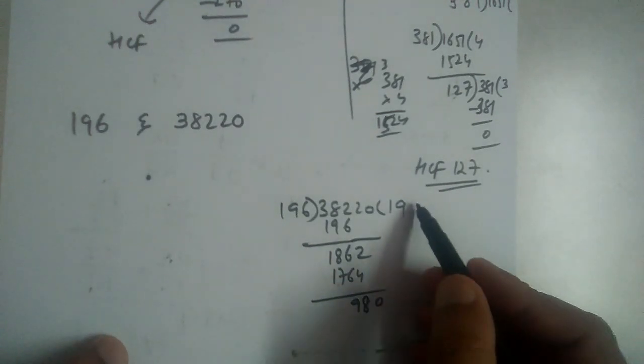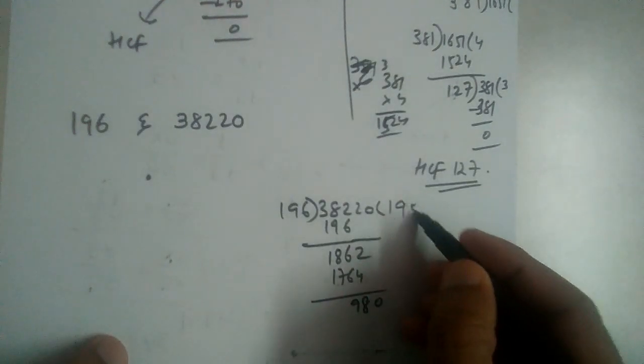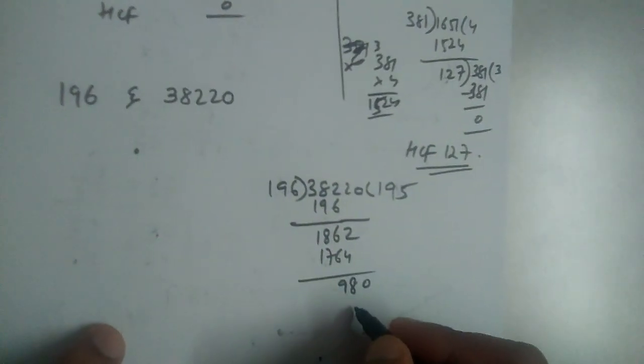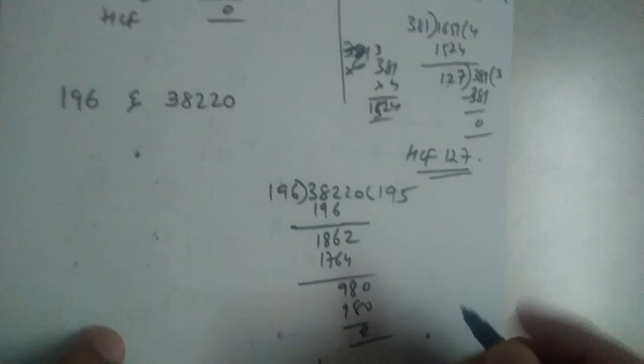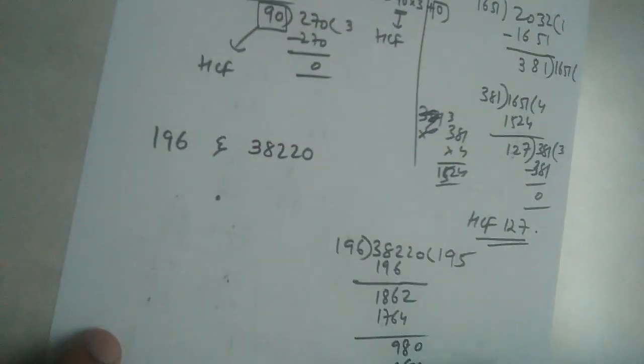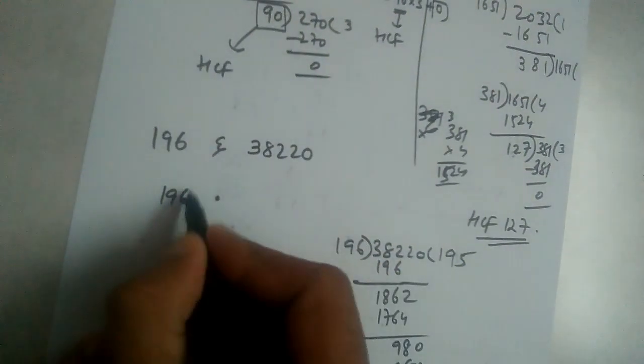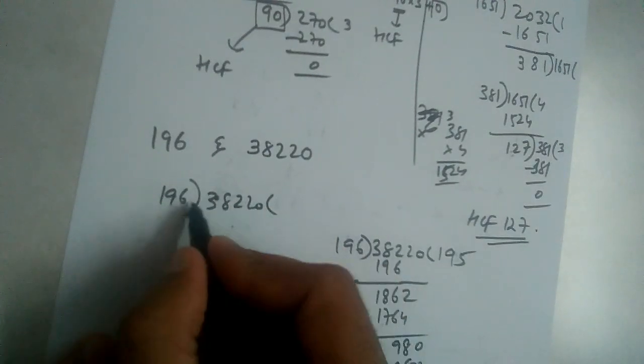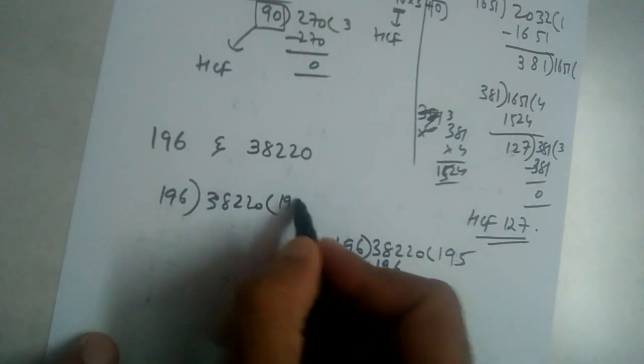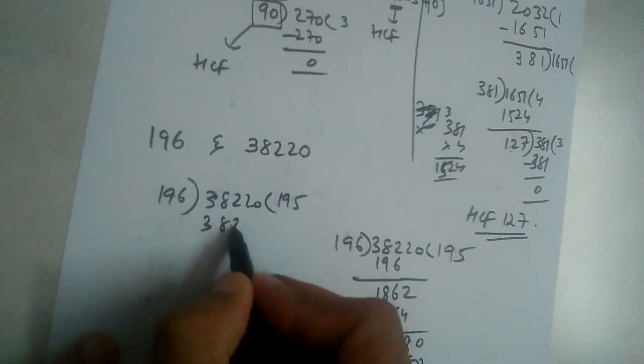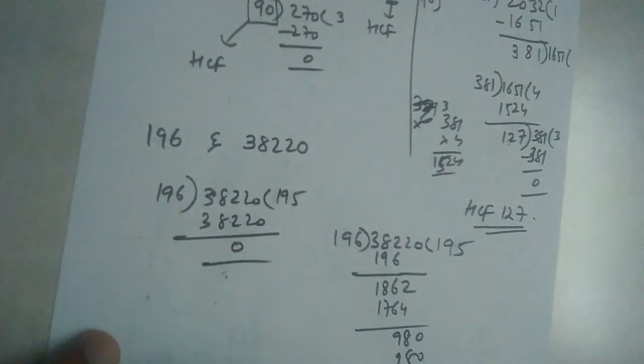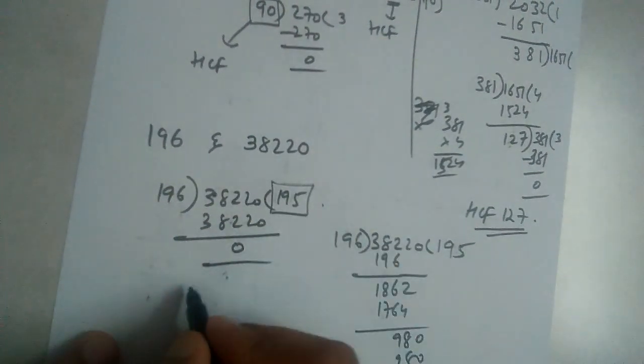704, and then 8, and then 8 and 1, 2 again. So what is HCF?